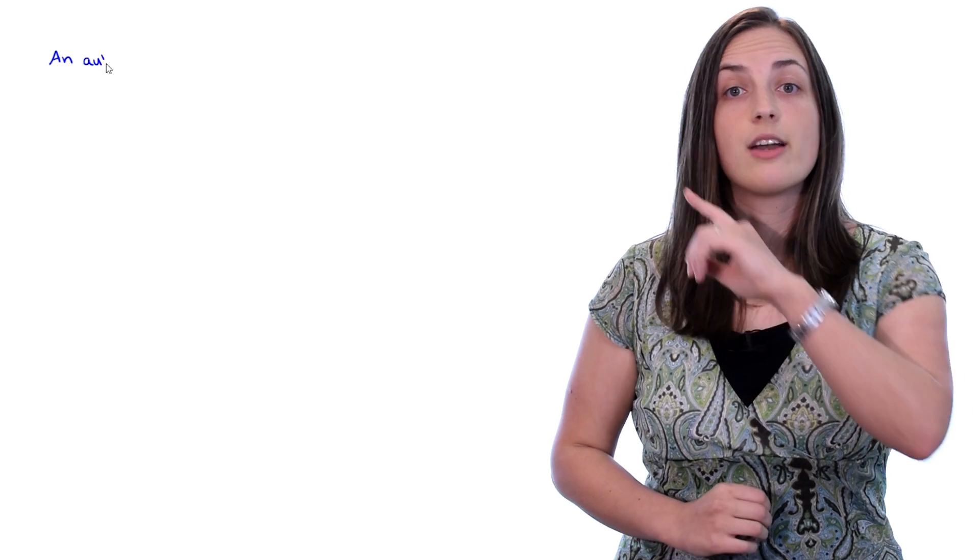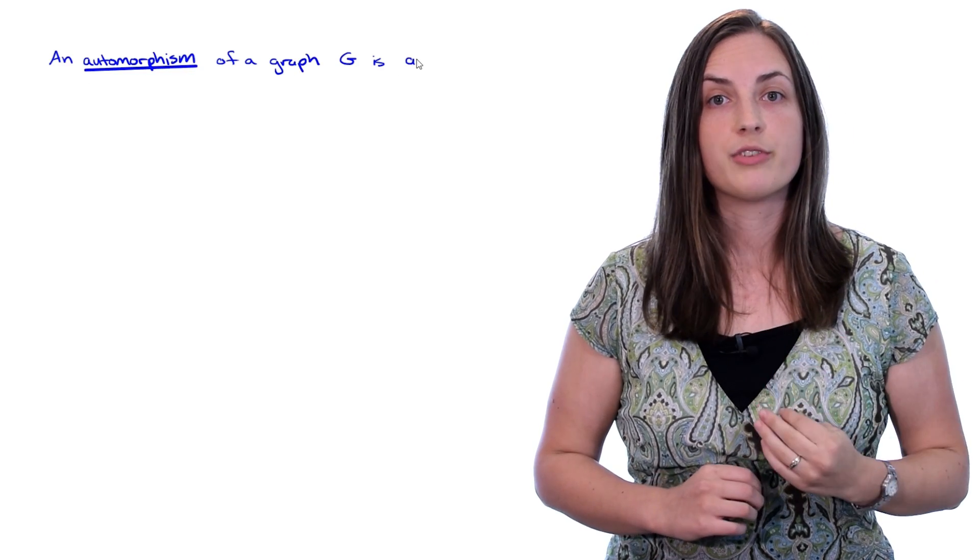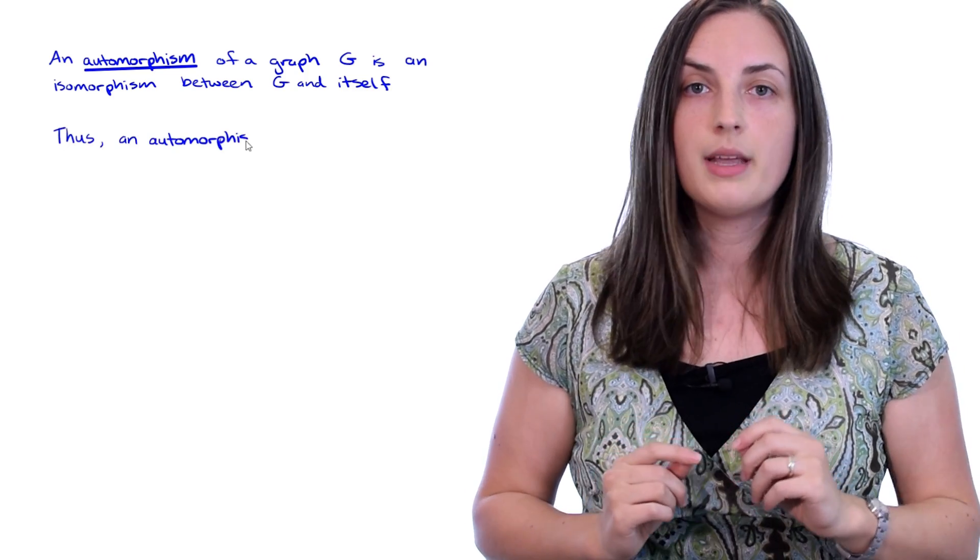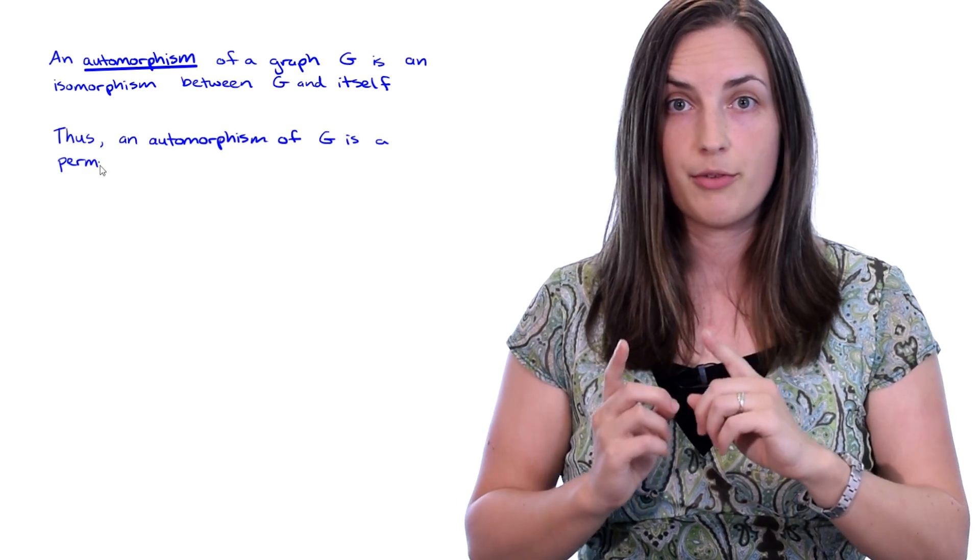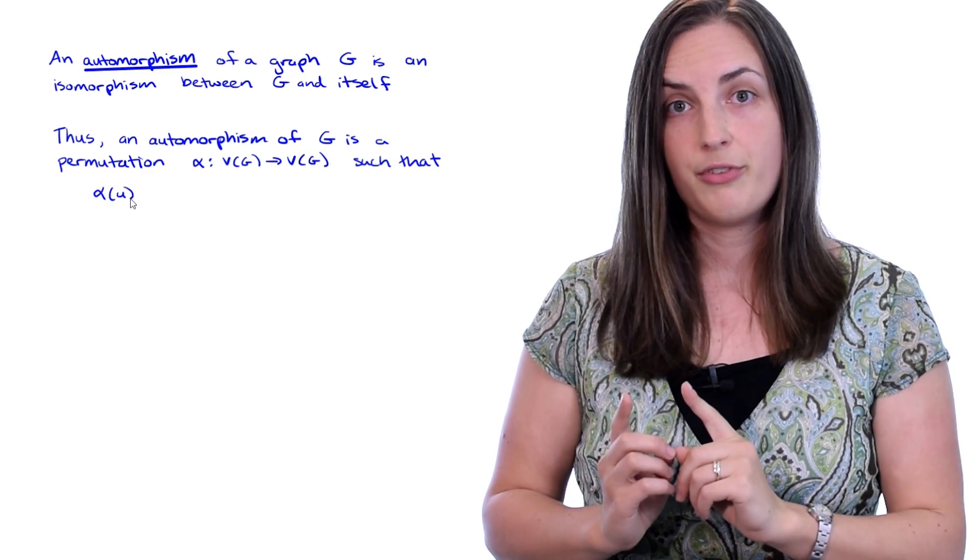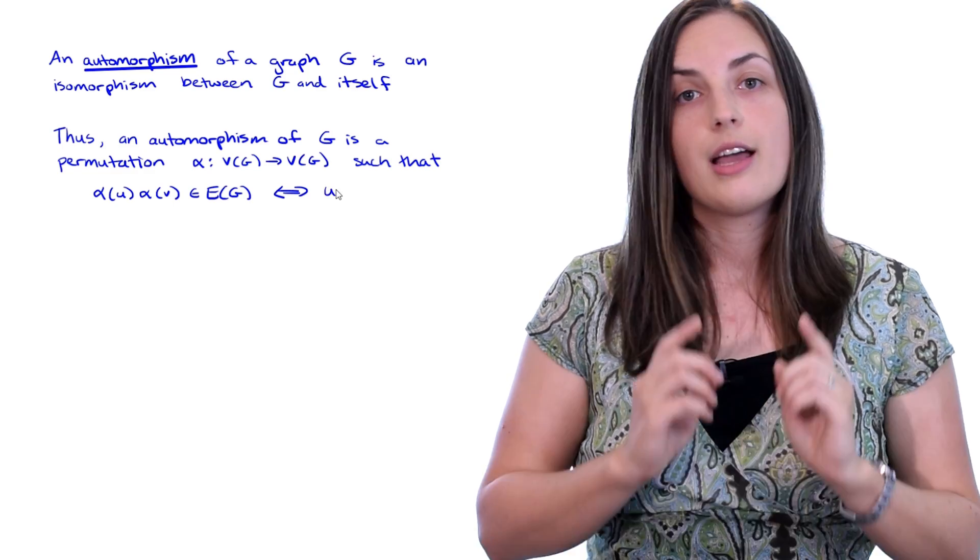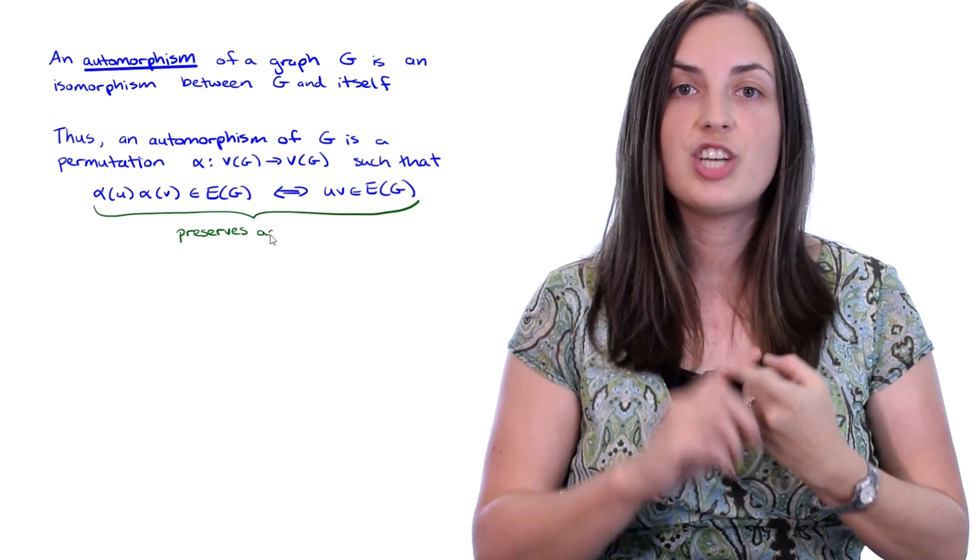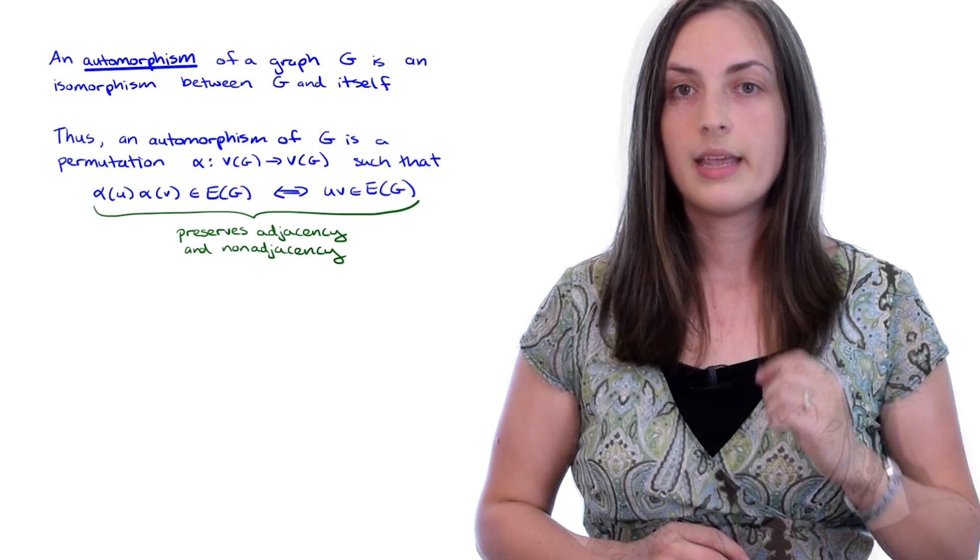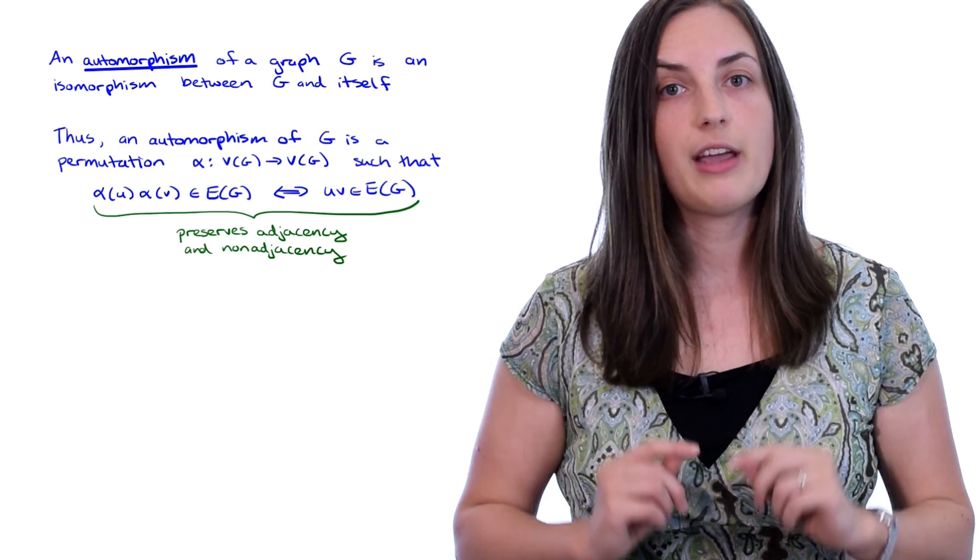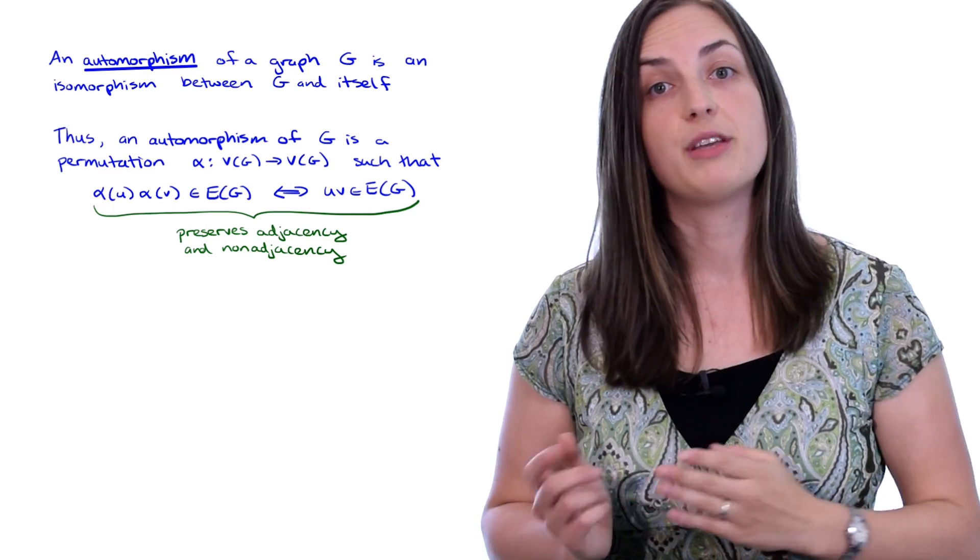Now we're ready for a more formal definition. We know that an automorphism of a graph is an isomorphism from the graph to itself. Thus, an automorphism is a permutation alpha from the vertex set to the vertex set, such that alpha of U, alpha of V is an edge, if and only if UV is an edge. This condition is what's telling you that adjacency and non-adjacency are preserved. This means that two vertices are adjacent after the map, if and only if they were adjacent before the mapping.